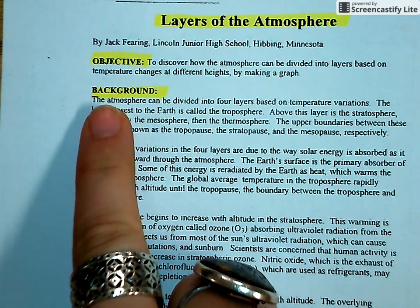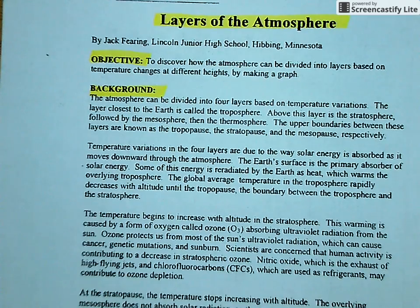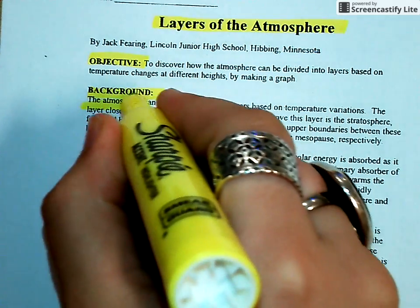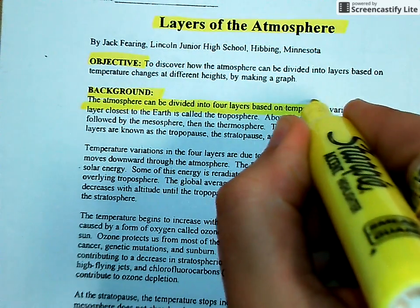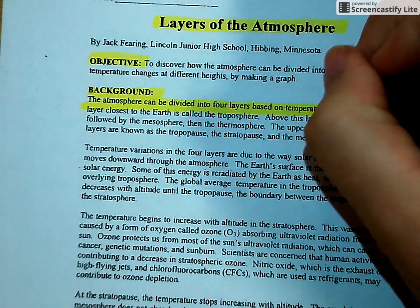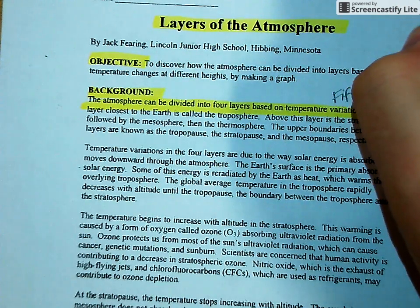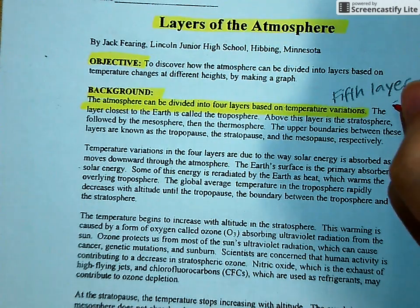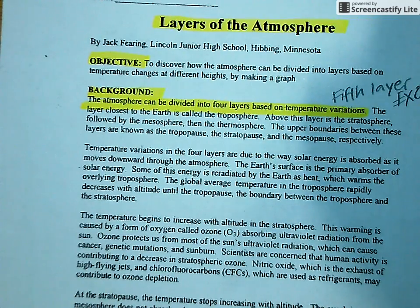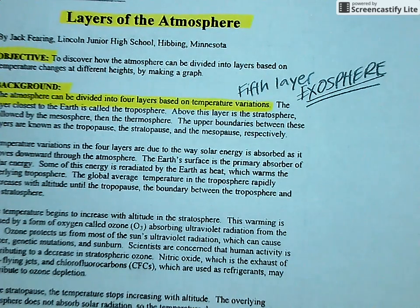But before you go any further, you need to make sure you read the background information, especially talking about temperature variations, especially that the atmosphere can be divided into four layers based on temperature variation. But there is a fifth layer, and we should know what that is, right? It equals the exosphere. So make sure you don't forget about the exosphere.